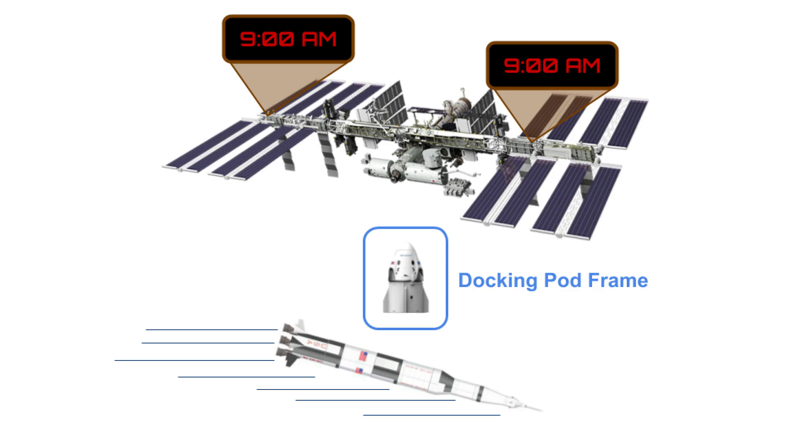Consider the case of a slow-moving docking pod about to dock with a station while a rocket flies by. From the docking pod's point of view, or frame, the station is at rest while the rocket is flying by. The docking pod also sees two clocks on the station strike 9am simultaneously.